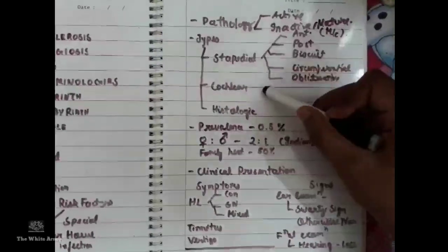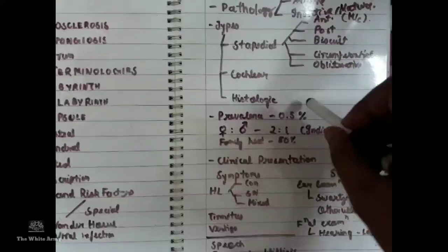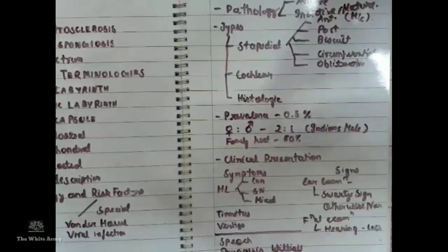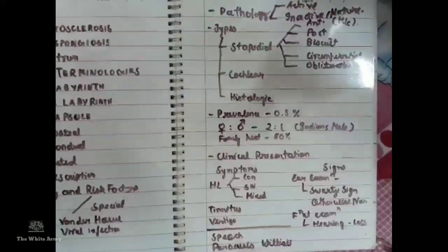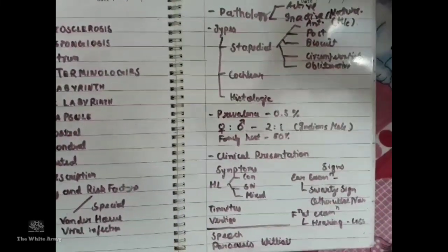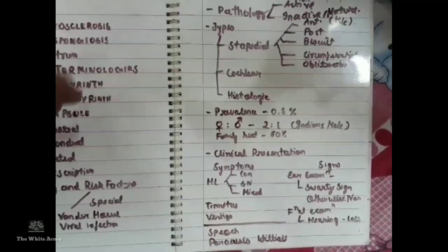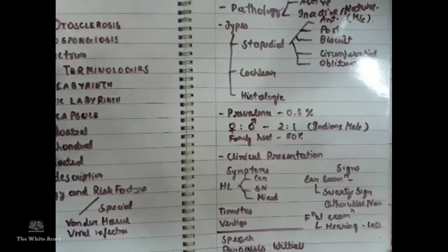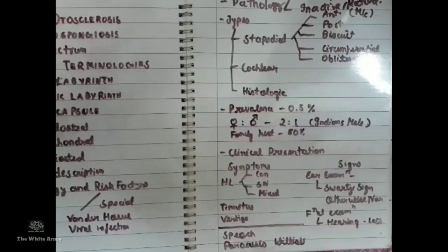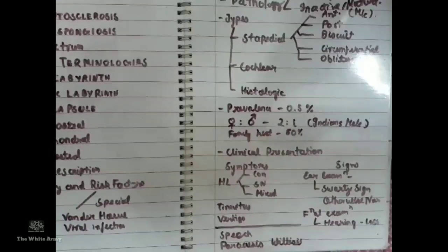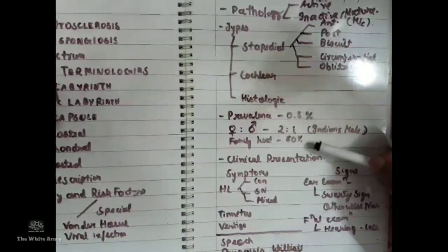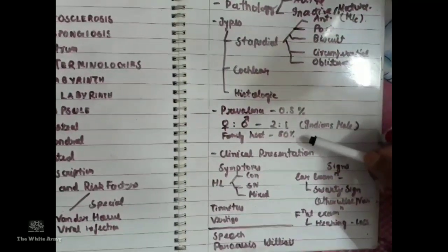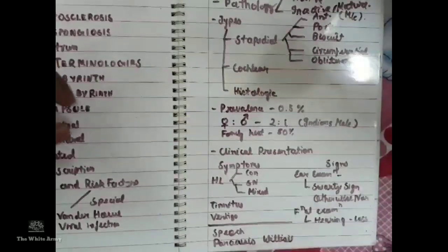The most common site is anterior, then cochlear, then histologic. The typical patient with otosclerosis is a female, 20 to 40 years of age, presenting with conductive hearing loss, most probably of Caucasian race. However, in India, males are more likely to present with otosclerosis. About 50% of otosclerosis cases have a family history; inheritance is autosomal dominant with incomplete penetrance and variable expressivity.